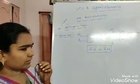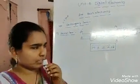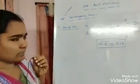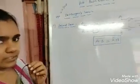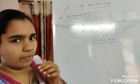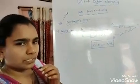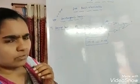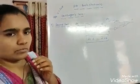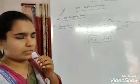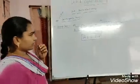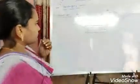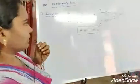Okay students, we have already seen the first law of De Morgan's Laws. De Morgan's Laws are two types: first law and second law, also called the first theorem or second theorem. We have seen the first law and next we go to the second law.